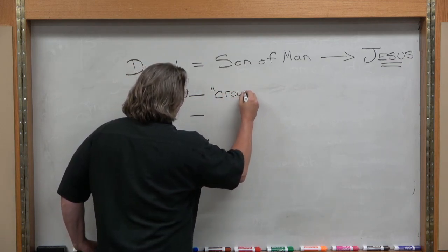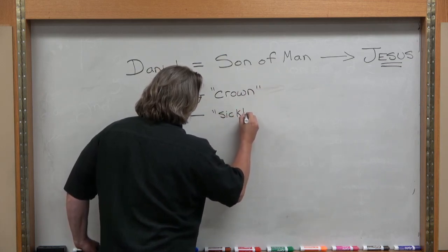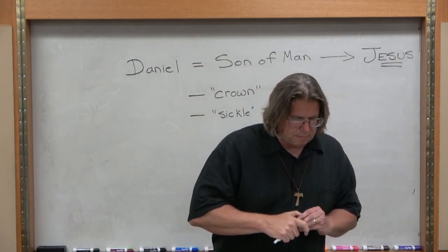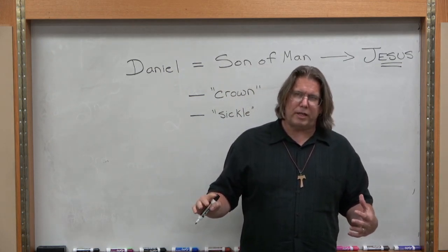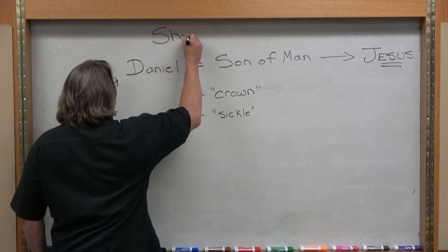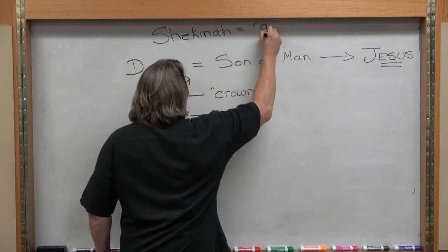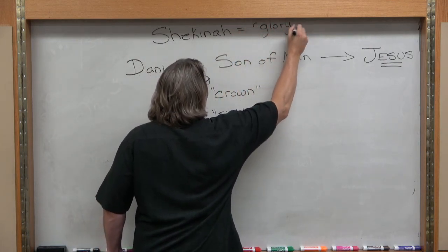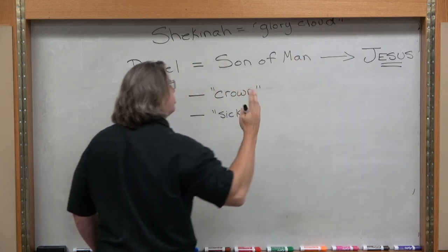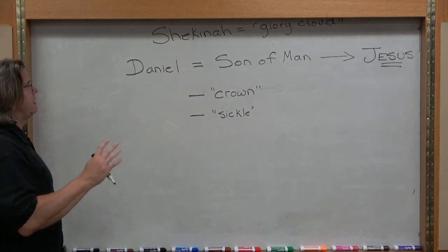Here Jesus is depicted holding two things not spoken of in earlier references to the Son of Man: a crown and a sickle. He's also seated on the cloud — that's called the Shekinah, the glory cloud, God's presence. You see it throughout the Old and New Testaments — it's how God makes himself manifest to us in this world, since we can't perceive God directly but we can perceive his glory.